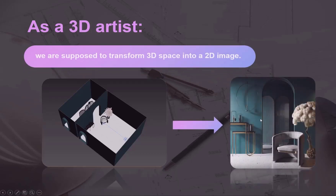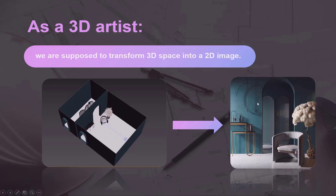As a 3D artist, the main thing that we are doing is transforming a 3D space that we have created — after working with a scene inside 3ds Max or other 3D modeling software like SketchUp or Revit — into a final 2D image. When we say a render, that's what we mean: a final 2D image that we can publish on social media or give to our clients. This process is what we call rendering.